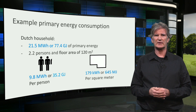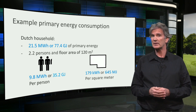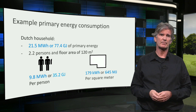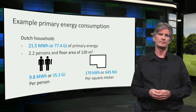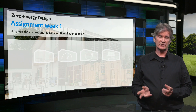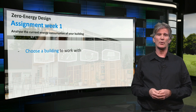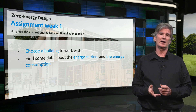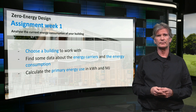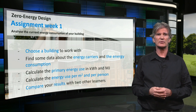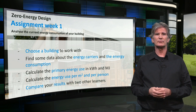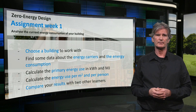When you calculate the energy used like this, the numbers are comparable between different building types and different climates. At the end of this week, we will discuss and compare the energy data you have submitted. For the assignment this week, we want you to choose a building to work with, find data about the energy carriers and the energy consumption, calculate the primary energy use, calculate the energy use per square meter and per person, and compare your result with two other learners. Further instructions for the assignment can be found on the next page.